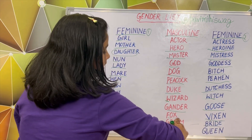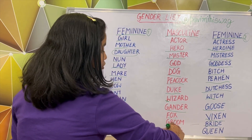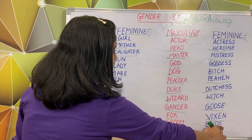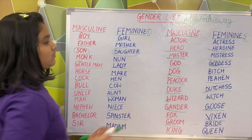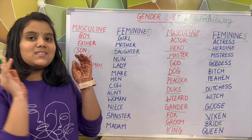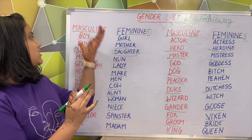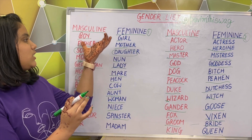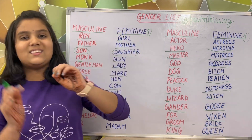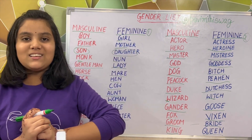And the most common: king — queen. I hope you understood some of the examples of the masculine gender and the feminine gender. Thanks for watching.